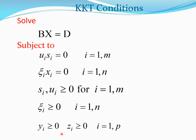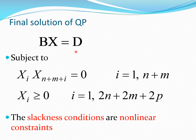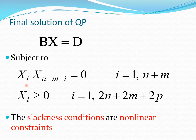We simplify by realizing that variables such as U, S, xi, Y, and Z are also parts of the X vector. Once you recognize this, the solution of the QP becomes a matrix equation B times X-bar equals D subject to a switching condition and the positivity requirement on all the design variables. The switching condition is non-linear, but treating it as such within the KKT-type method allows us to obtain the solution. Examples illustrating solutions of typical problems using this method can be found in various textbooks.